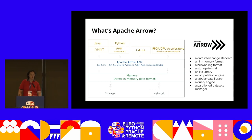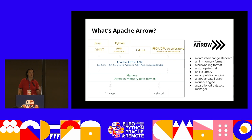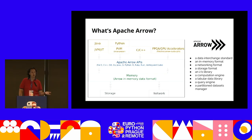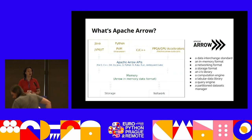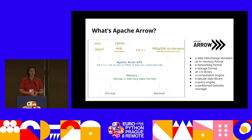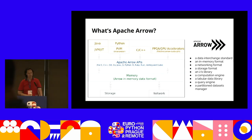Apache Arrow, for those of you that don't know what it is, was born as an in-memory format to represent data in a way that is understood by all libraries and languages. So it was a polyglot and agnostic format to share data between different software. Over the years, it evolved from just a format into a library that supports data interchange, modifying in-memory data, transmitting that format over the network, saving to files or loading from files, any kind of I/O. It provides a built-in compute engine and a whole range of capabilities.